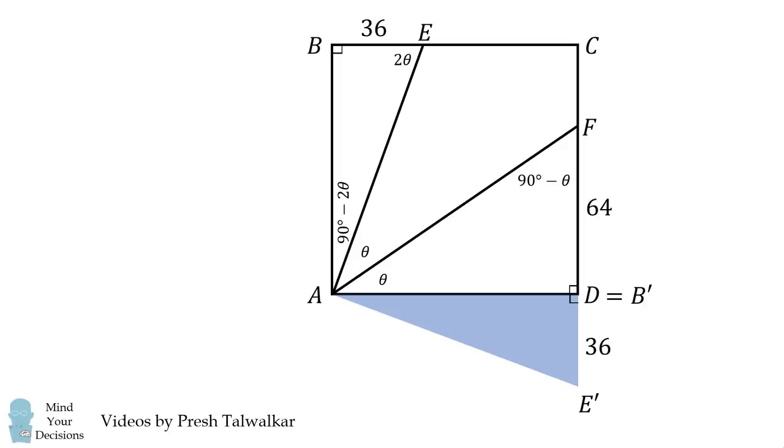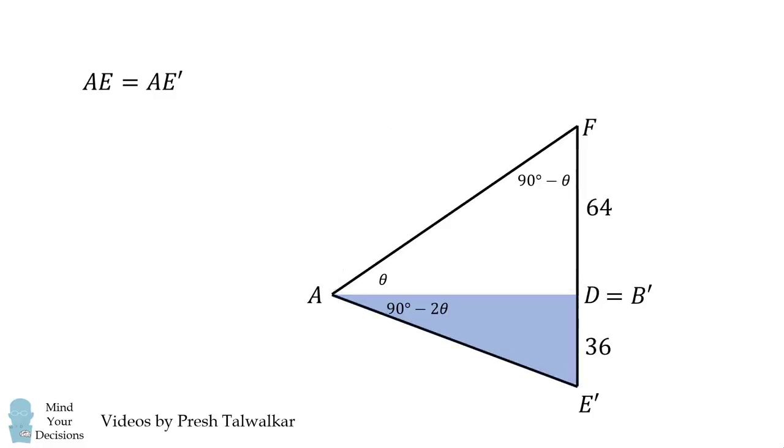Now, this will be equal to 36. This is B'E'. Here, we copy over the angle. Now, AE is equal to AE' because we've simply rotated this length. Next, we look at triangle AFE'. We'll calculate that FAE' is equal to 90 degrees minus theta. We have two angles of equal measure, and therefore the sides opposite them will be equal to each other.